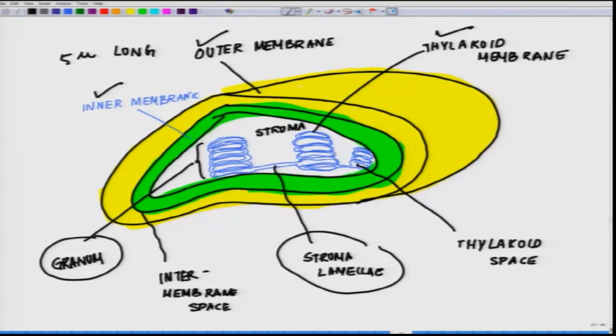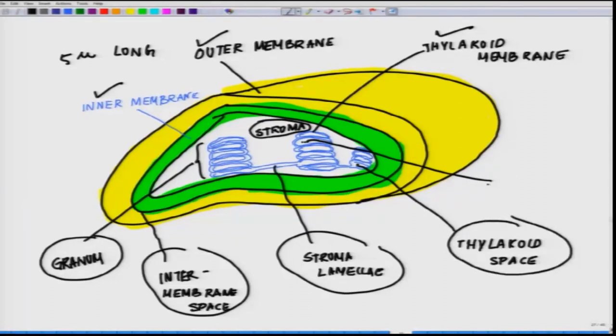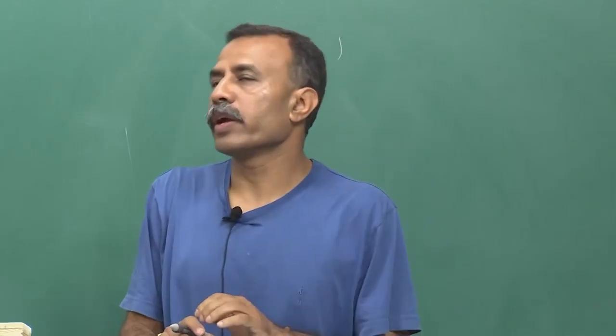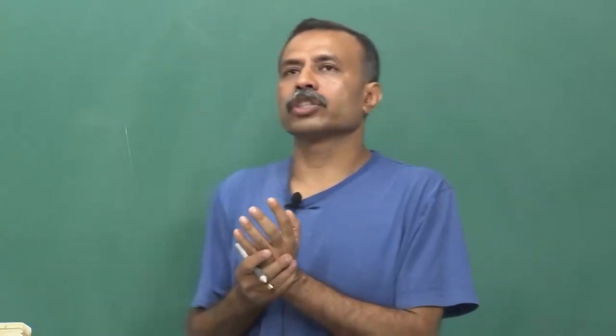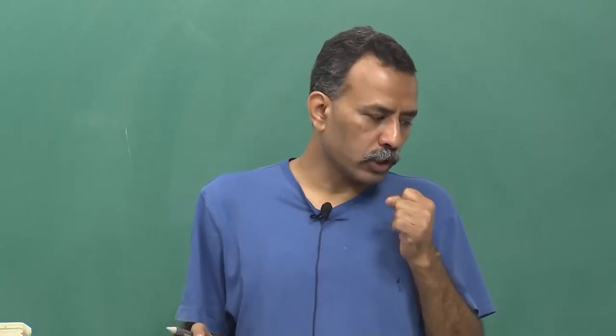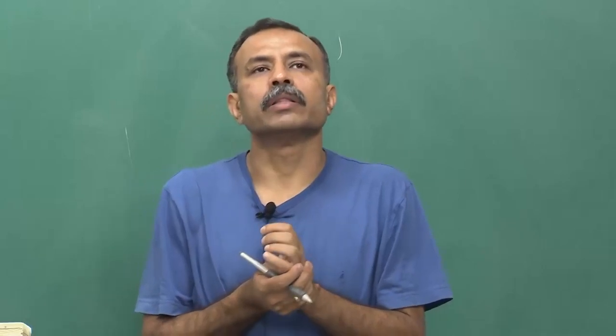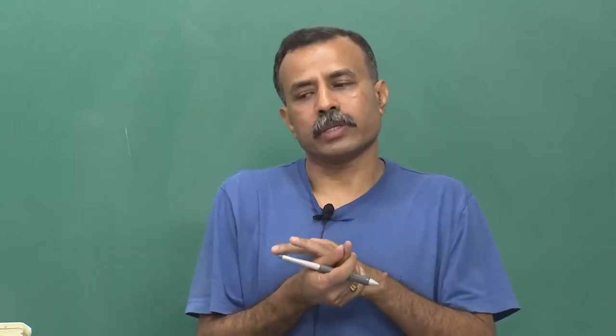In developing chloroplast, the thylakoids arise from invagination of the inner membrane, and so they are analogous to the mitochondrial structures where you see structures like cristae in the mitochondria. So this is the overall architecture of the chloroplast. I'll close here. In the next class, we will talk about the initial reactions of photosynthesis. Thank you.